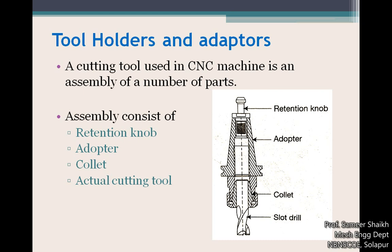A cutting tool used in a CNC machine is an assembly of a number of parts. The basic idea behind tool holders and adapters is to hold the cutting tool inside the spindle of the machining center. The spindle rotates at very high speeds, so the cutting tool also rotates. The assembly generally consists of four to five components: a retention knob, an adapter, a collet, a collet nut, and the actual cutting tool.